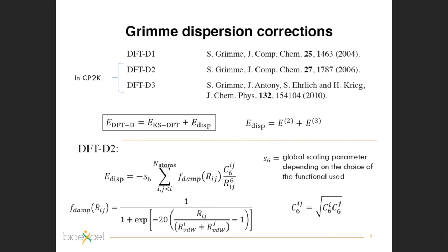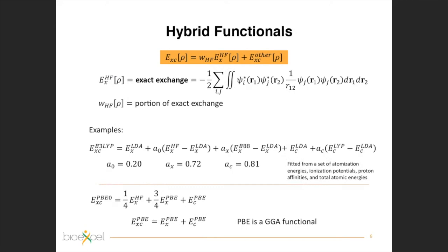Matthew asks: 'Did I understand correctly from the presentation that ubiquitous B3LYP functionals are not recommended in CP2K? Why not?' I would not say they are not recommended. B3LYP is a hybrid functional, so it contains an exact exchange term, which is computationally more expensive — especially within the plane waves basis set framework.